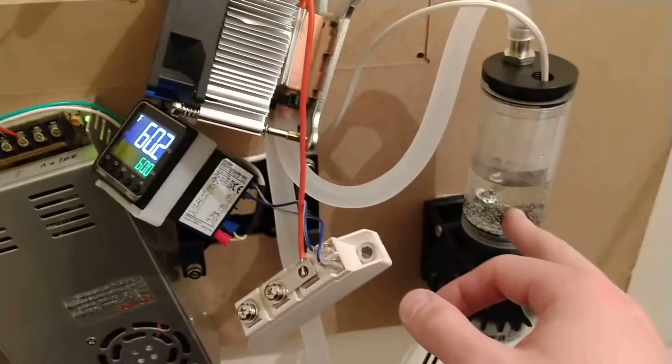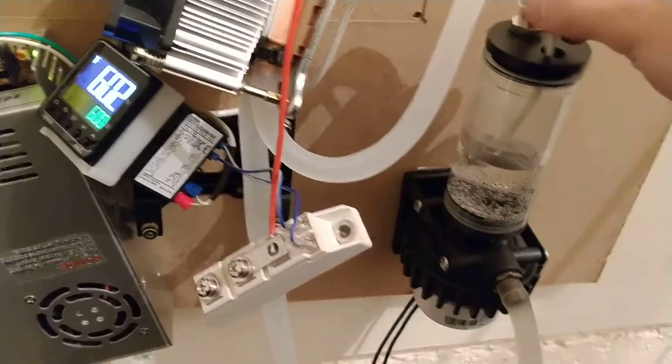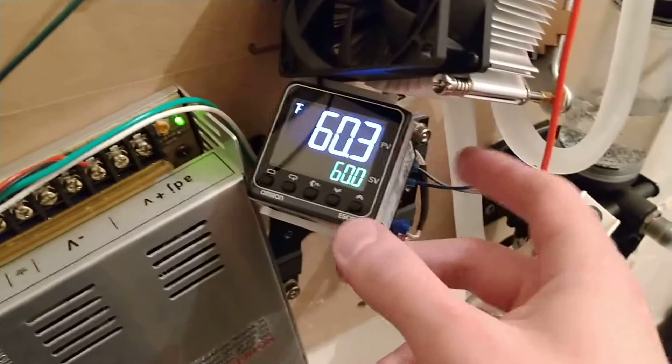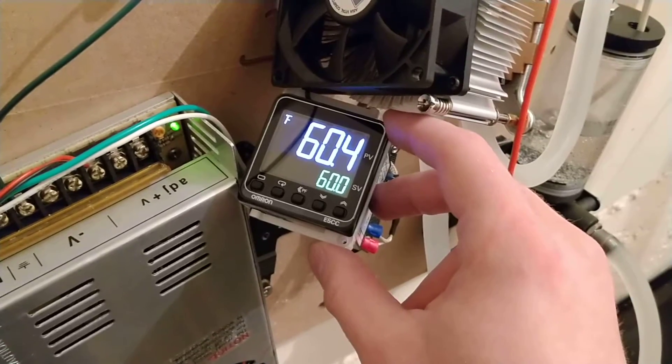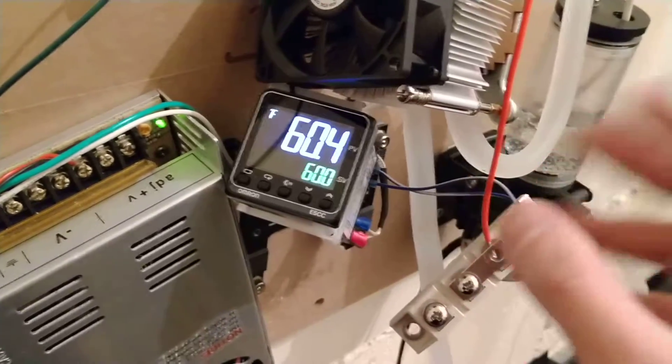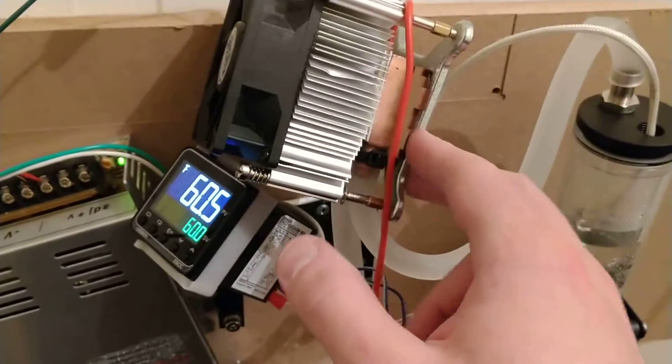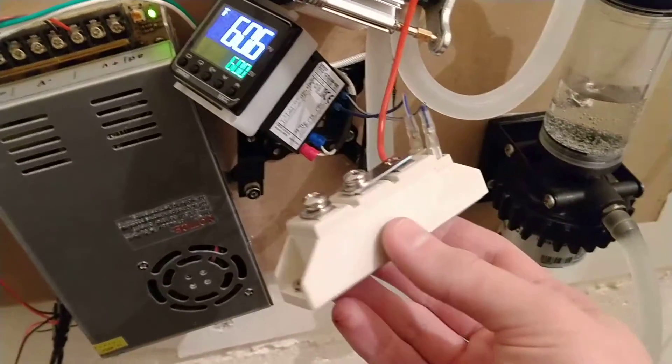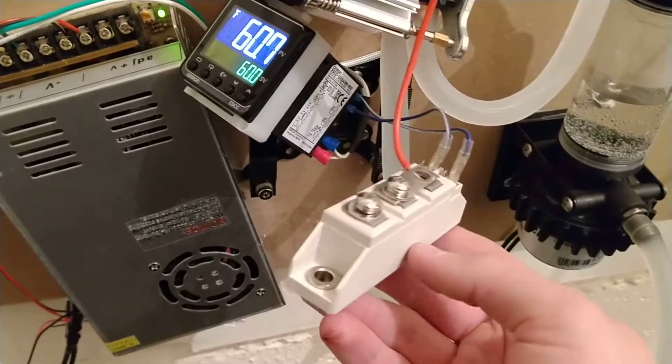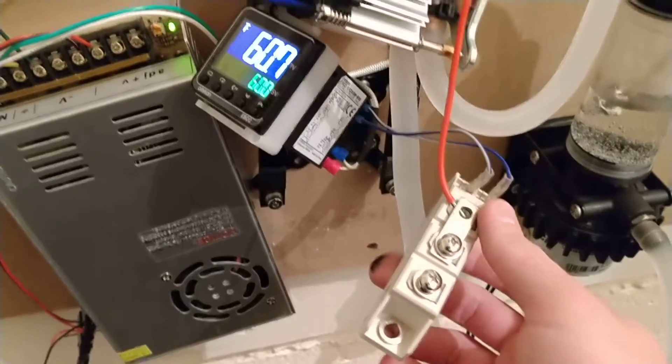This is a K-type thermocouple which goes into an Omron E5 CC temperature controller. Issue number one is I'm not using the proper relay. This is an AC switching relay; I need to switch DC 12 volts. So I had to learn the hard way that that doesn't work.